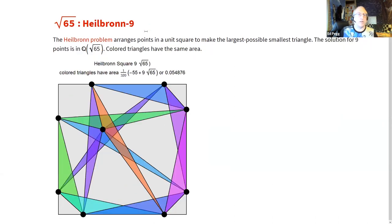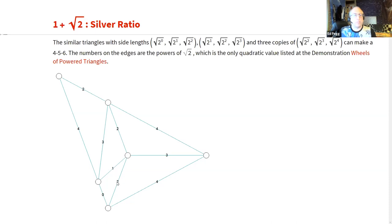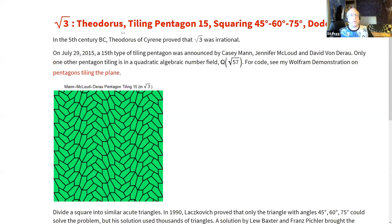The bronze constant, the silver constant — which is basically 2 — and their power triangles follow the same pattern. The square root of 2 to the zeroth power is 1, to the first is √2, to the second is 2. These triangles, using powers 0, 1, 2, let you build a 4-5-6 triangle. With the square root of 3, you can obtain the 15th tiling pentagon, and everything works nicely in the square root of 3 field.